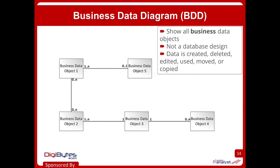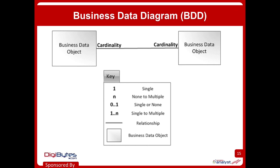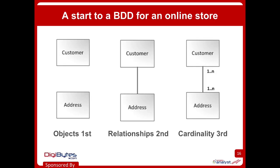I go through that process very rigorously where I ask about these six verbs on each of the different data objects. It helps me find areas where maybe I haven't fully explored the system requirements. This is also a really nice tool to find some of the business rules that your business users may not be thinking to tell you about. When we create these, the shapes are: business data objects in rectangles — that's the main component. The key shows the different things that can show up on what we call the cardinality line. The line says I've got a relationship between these two objects, and the cardinality tells me the nature of that particular relationship.